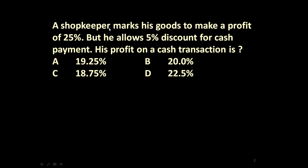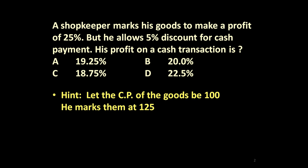So the shopkeeper marks his goods to make a profit of 25%, but allows a 5% discount. We have to determine his net profit. First, let us assume the cost price of the article or goods is rupees 100. He wants 25% profit on this cost price, so he marks them at 125.